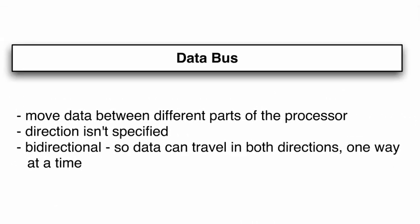The data bus moves data between different parts of the processor. The direction isn't specified — it is bidirectional, so data can travel in both directions, one way at a time. Those are the three things you need to know for the data bus.